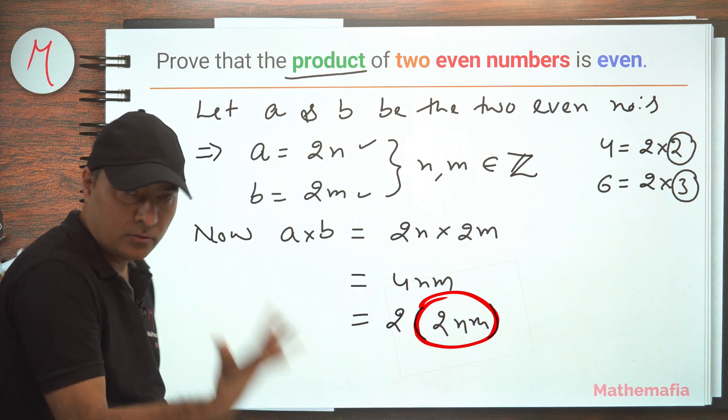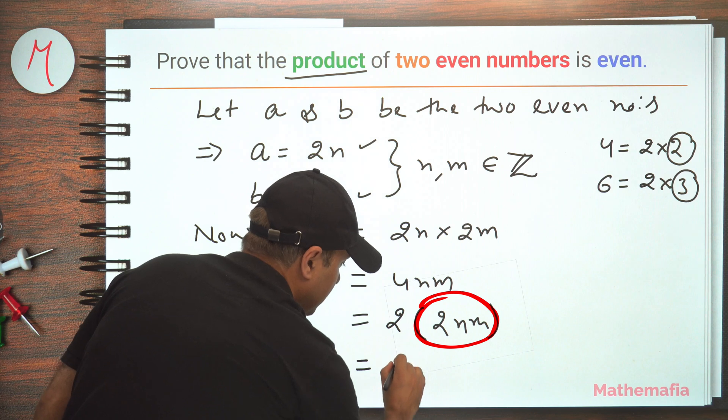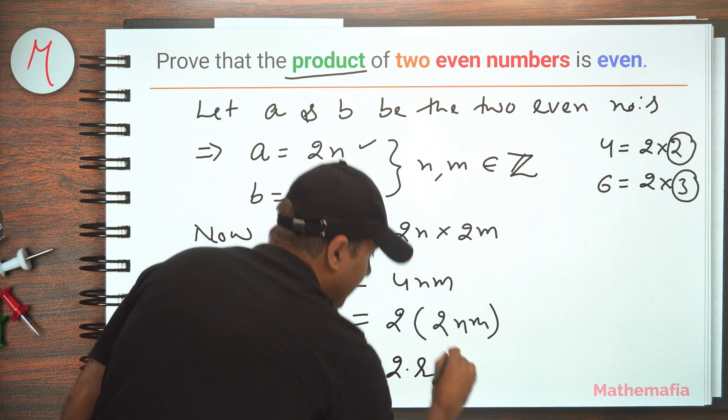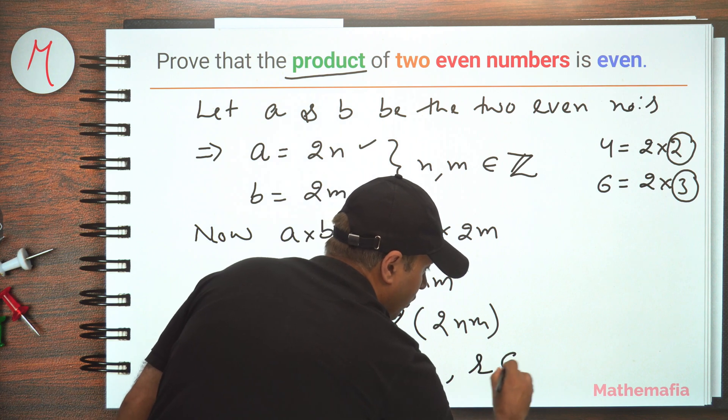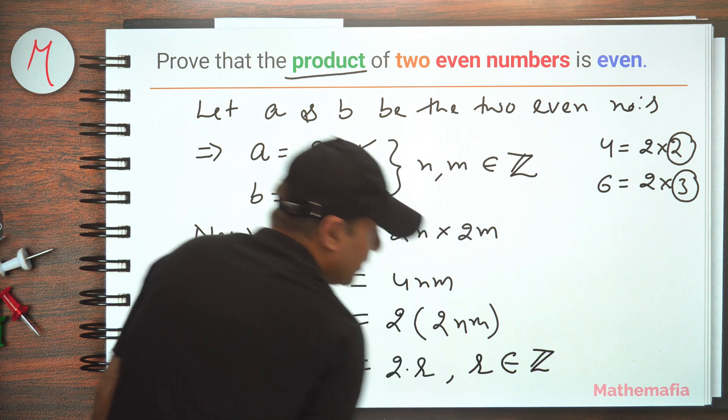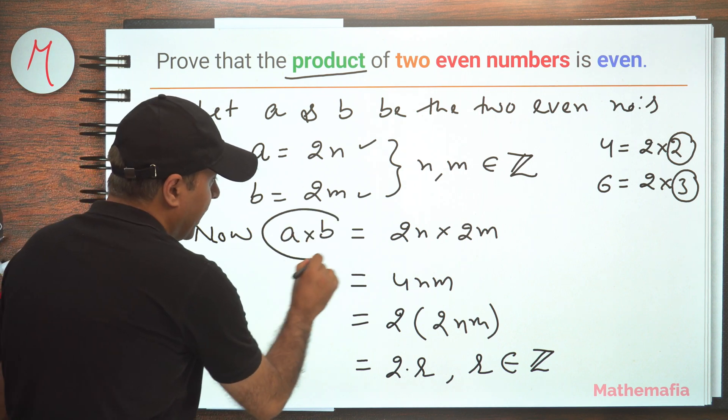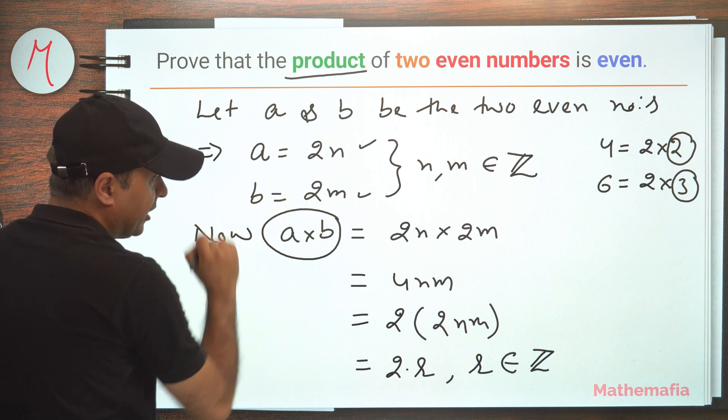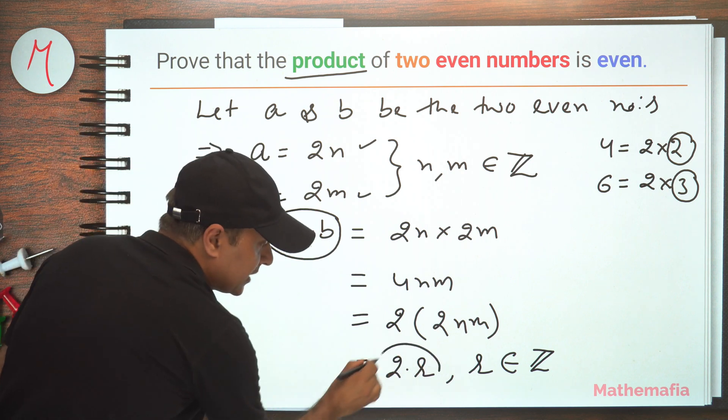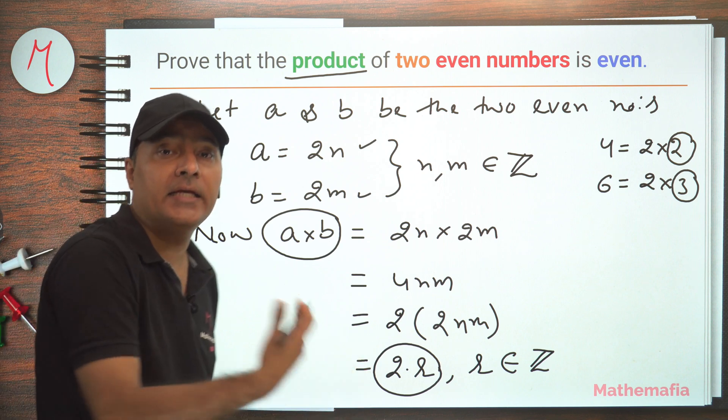So let's call it r. We can write this as 2 times r, where r is 2nm and r is also an integer. And that's what we had to prove: if we multiply two even numbers, then the output is also even because it is of the form 2 times an integer.